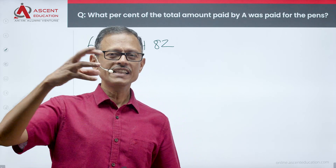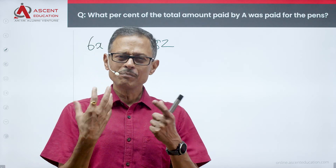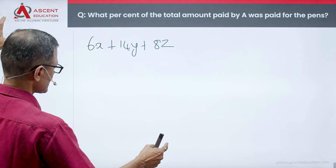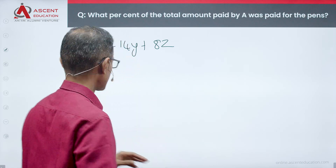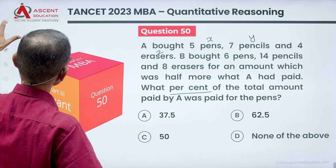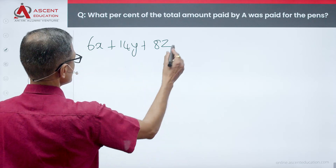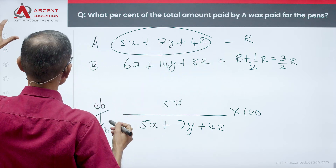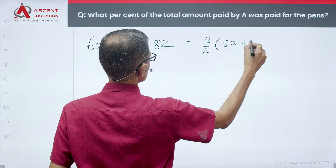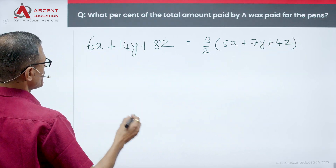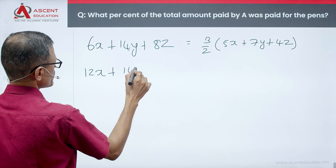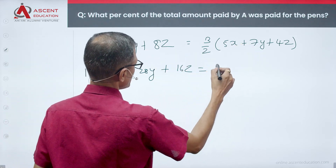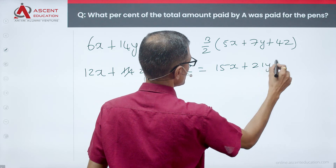With three variables and two equations, we need to find the answer in terms of one variable. B paid 1.5R = (3/2) of R, and R = 5x + 7y + 4z. So 6x + 14y + 8z = (3/2)(5x + 7y + 4z). Cross-multiplying: 12x + 28y + 16z = 15x + 21y + 12z.